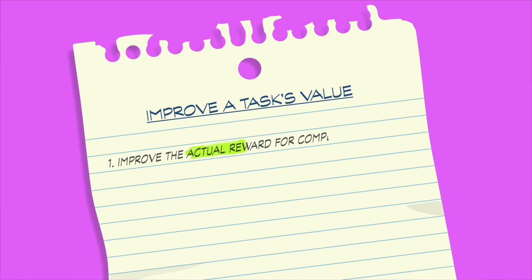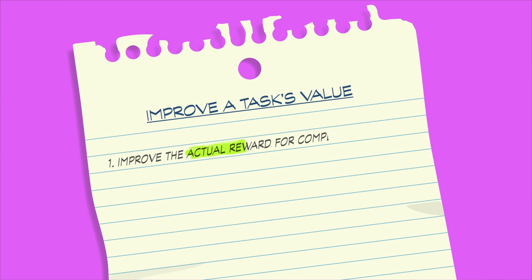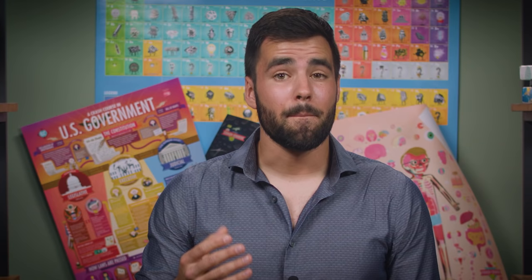When it comes to improving a task's value, there are a number of things you can do. Number one, improve the actual reward for completing the task. Number two, improve the experience of doing the work itself. And number three, add additional rewards for completing subtasks. The best way to improve the first item is to choose work that's more fulfilling to you. You have some control over this when selecting your classes, and as you move more into your career, that control will increase. However, when you're a student, there are still required classes and things you just have to do, and once you've started, it's pretty difficult to improve the actual reward – it's usually set in stone. If you finish a math assignment, you'll get the credit for it and improve your math skills. But you do have a lot of control over the other two items.